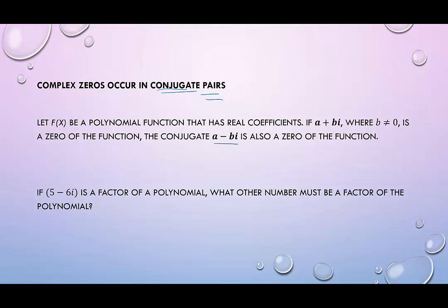then its conjugate a - bi must also be a zero of the function. So when there's one, there must be the other, no matter what.